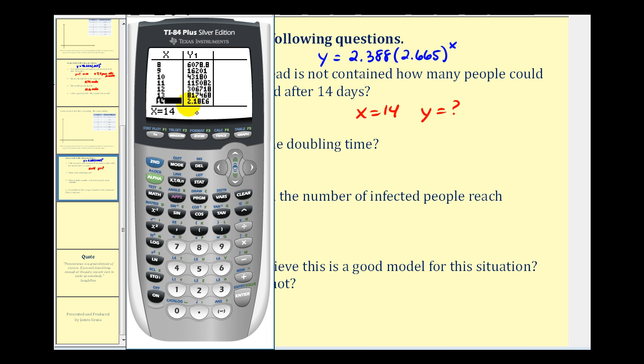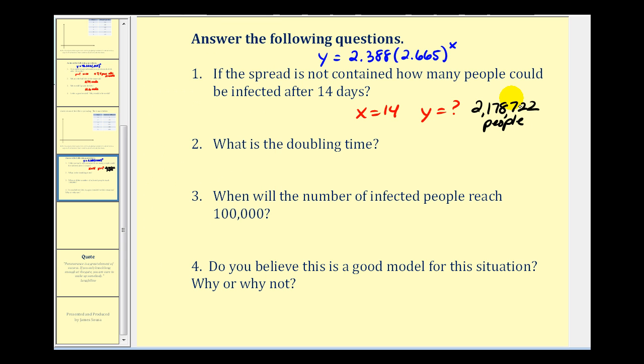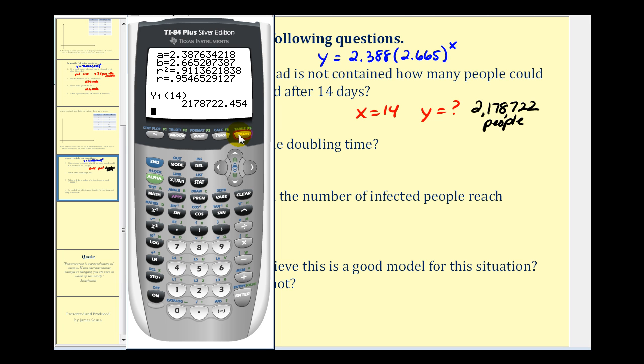Another way to answer this question, so that we can see more digits of this value, would be to go back to the home screen, second, mode, press vars, right arrow once, enter, enter, and we'll determine what y one of 14 would be. So we'll just put 14 in parentheses, just like function notation. It'll give us the value showing more digits. So it's going to be approximately 2,178,722 people. So this is the power of exponential growth, and one of the reasons why it's important to contain new infections of new diseases. However, if we go back to our graph for a minute, notice how our function is increasing rather rapidly, even though the data doesn't seem to be increasing quite as fast. So this may not be the best estimate, but it is our estimate based upon the model.